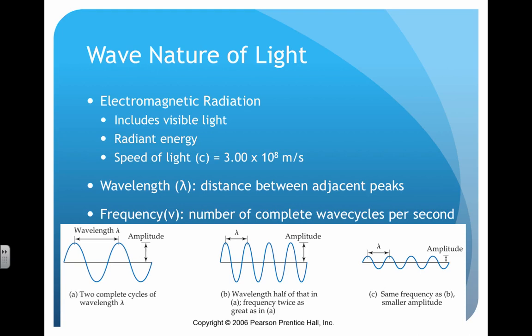Light is a form of what we call electromagnetic radiation, and it's part of what we call the electromagnetic radiation spectrum, or EM spectrum. I'll show you what that looks like in a little bit. Visible light is included in any form of radiant energy. No matter what form of radiant energy we have, anything on the EM spectrum will always travel at the speed of light. This is a constant we call c — you might remember that from E equals mc squared — and it has a velocity of 3 times 10 to the 8th meters per second.